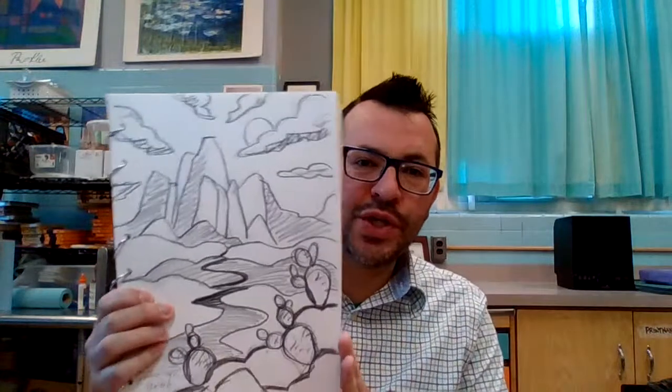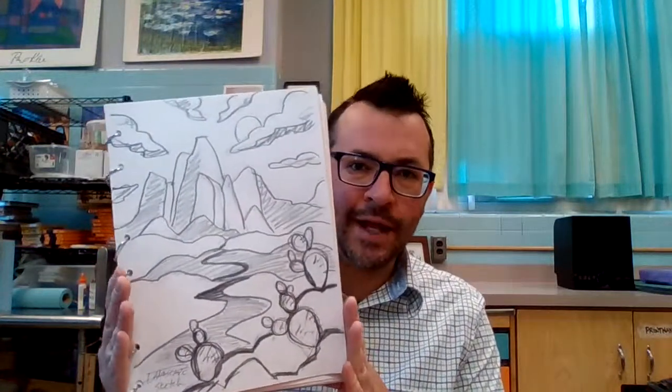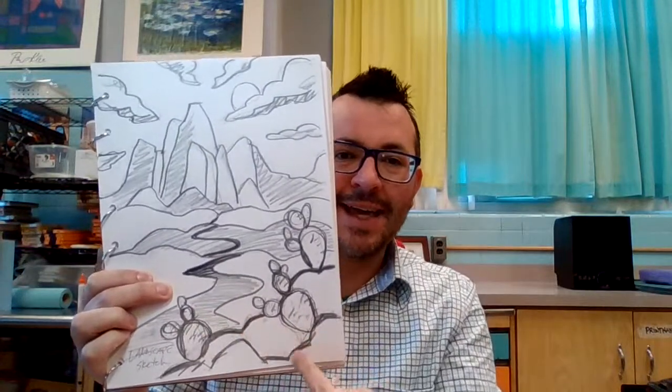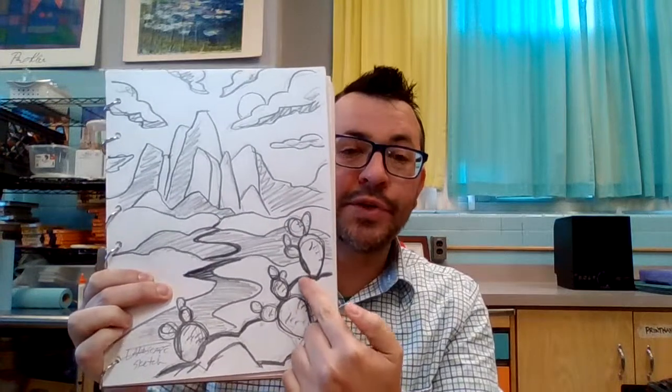Your first step for this project should be to sketch out your plan for your landscape. So this is my sketch and I've done some mountains in the background with some clouds and a moon in the sky, then some hills in the middle ground, and then these rocks and cacti here in the foreground. So your sketch needs to have a clear foreground, middle ground, and background.